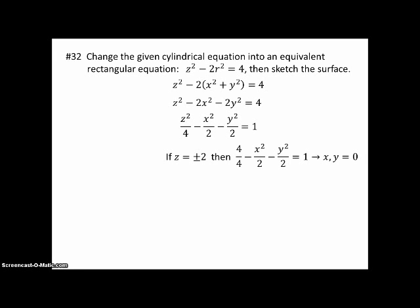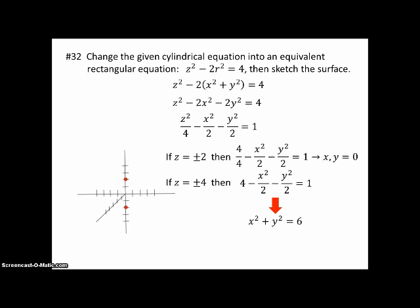Now notice that if z is plus or minus 2, then that first term becomes 1. And we get x squared, basically, x squared over 2 plus y squared over 2 has to equal 0. So that makes x and y 0. And so on my drawing, I'm going to put dots at plus or minus 2 on the z axis. And then, for example, if z is plus or minus 4, then z squared over 4 reduces to 4. If we bring that over, we get a negative 3. And multiplying through and simplifying it, we get a circle with radius square root of 6 when z is plus or minus 4. So I drew circles there on the z axis at plus or minus 4. And so since I know it's a hyperboloid of two sheets, I kind of know what it's going to look like from the previous section. And then I can just pretty it up a little bit.